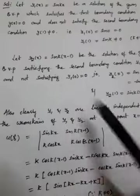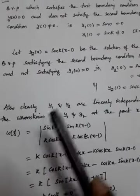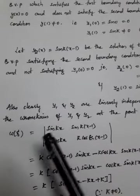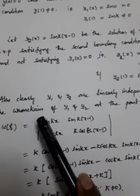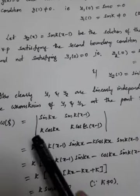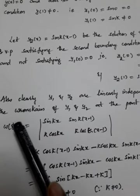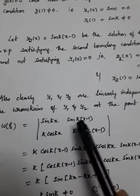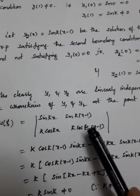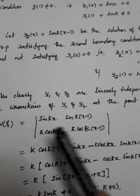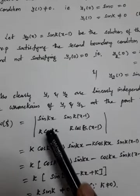Before that, we will verify that y1 and y2 are linearly independent, meaning the Wronskian is not equal to 0. We find the Wronskian W(y1, y2) at x = ξ. We have sin(kx) and sin(k(x-1)) in the first row, and their derivatives k·cos(kx) and k·cos(k(x-1)) in the second row — that is y1, y2, y1', y2'.